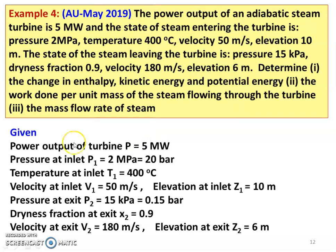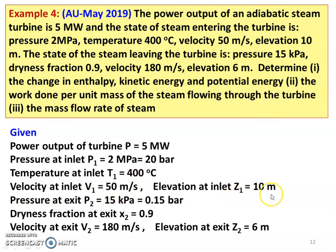Writing down the given data. Power output of the turbine P equal to 5 megawatt. Inlet condition: pressure P1 equal to 2 megapascal, which is 20 bar. Note: 1 megapascal equals 10 bar, since 1 megapascal equals 10 to the power 6 pascal, and 10 to the power 5 pascal equals 1 bar. Temperature at inlet T1 equals 400 degree Celsius. Velocity at inlet V1 equals 50 meters per second. Elevation at inlet Z1 equals 10 meters.